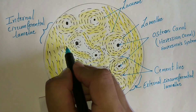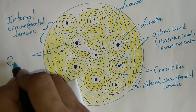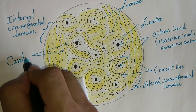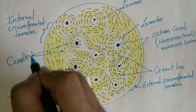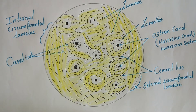Now, canaliculi. Radiating from each lacuna in all directions are tiny canals called canaliculi. Canaliculi penetrate the lamellae and anastomose with canaliculi from other lacunae, forming a network of communication channels with other osteocytes. Some of the canaliculi open directly into the central or Haversian canal of the osteone.